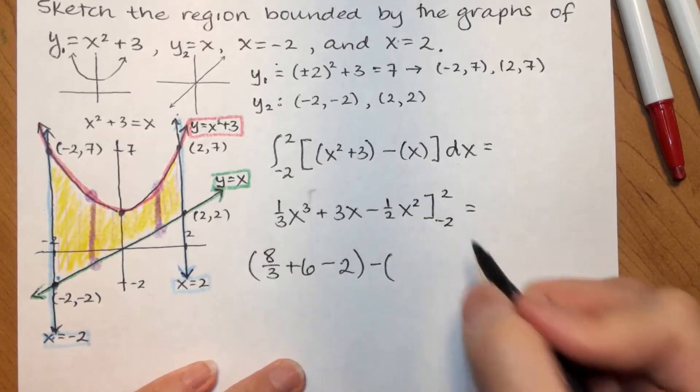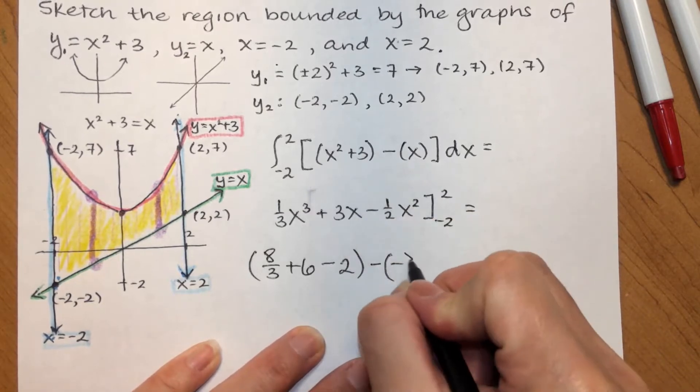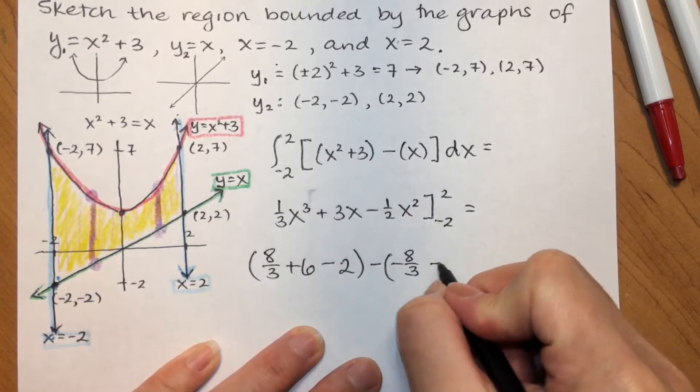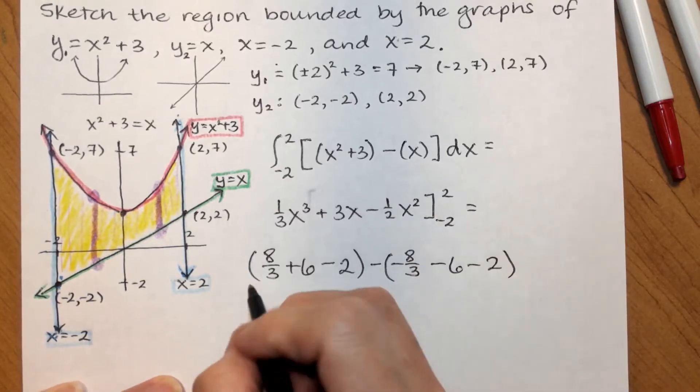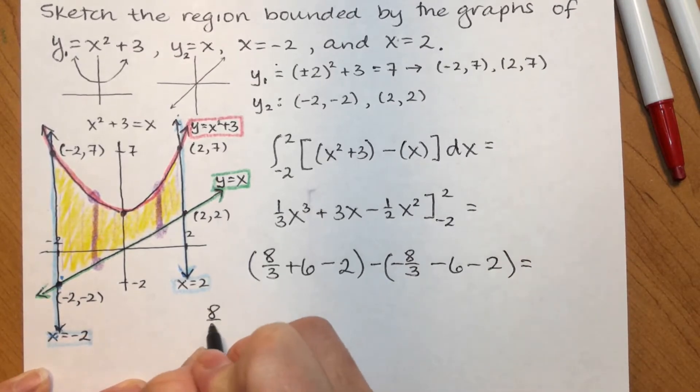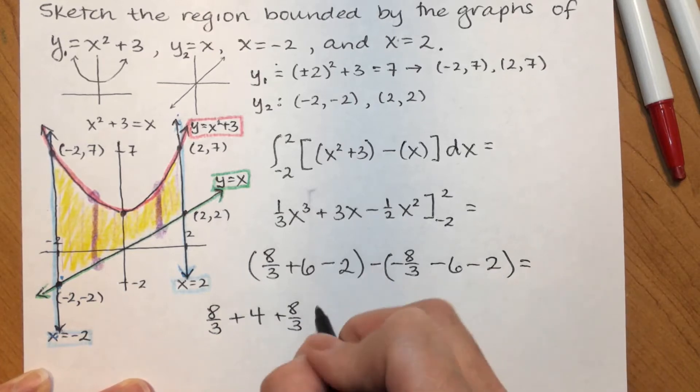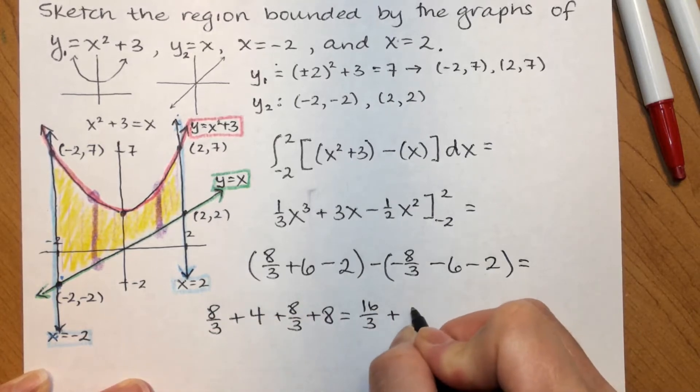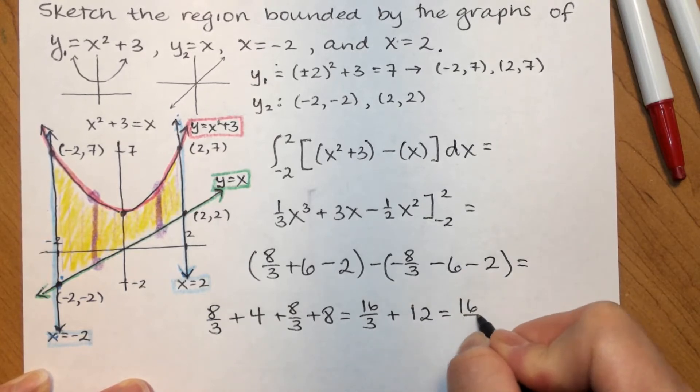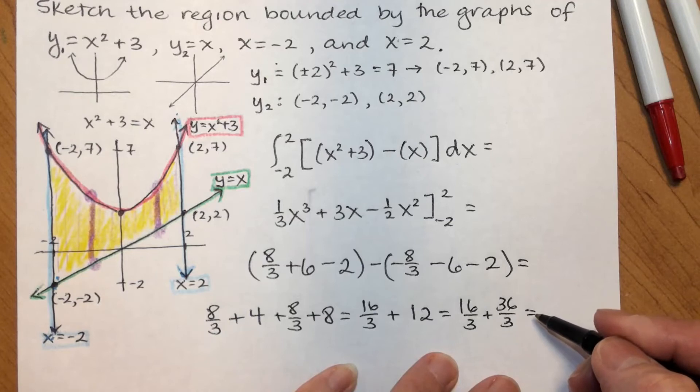When I plug a negative 2 in, let's be careful with our signs here. Negative 2 cubed is negative 8, so negative 8 thirds. That's going to give me a minus 6. And, this is going to be 4 over 2, so minus 2. So, I'm going to have 8 thirds plus 4. Let's make that a 4. Plus 8 thirds. And, then minus 8 is going to become a plus 8. So, I have 16 thirds plus 12, or 16 thirds plus 36 thirds, which is going to give me 52 over 3.